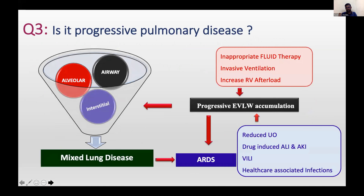A pediatric ARDS spectrum may evolve to have some obstructive airway features. A child starting with bronchiolitis may develop multiple atelectases and evolve to have significant parenchymal involvement. This is quite common. We should not miss this when deciding appropriate respiratory support. A child may start with alveolar, airway, or interstitial disease, but because of changes in extravascular lung water — incipient pulmonary edema — the lung condition may progress to a mixed lung pattern with more than one component involved.